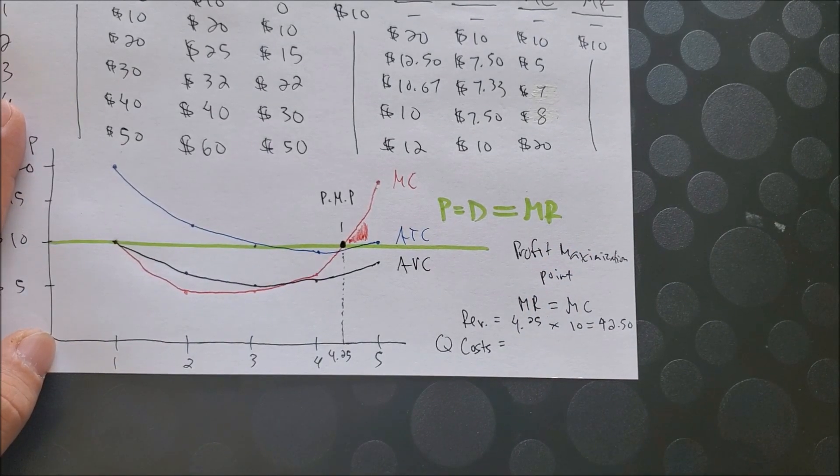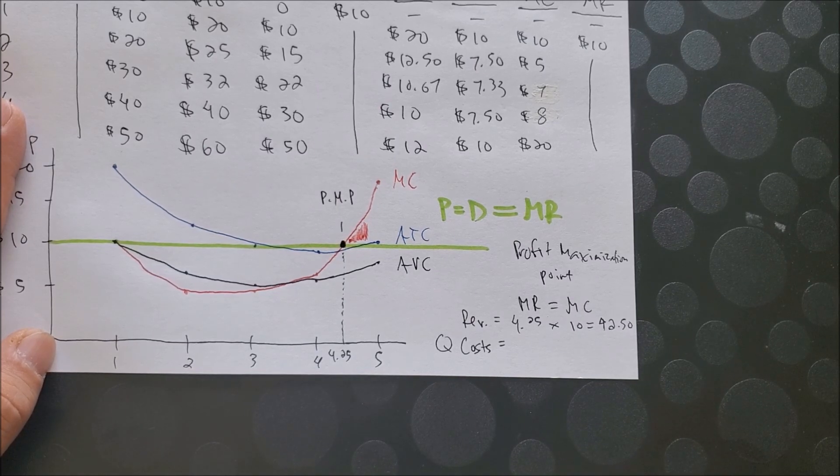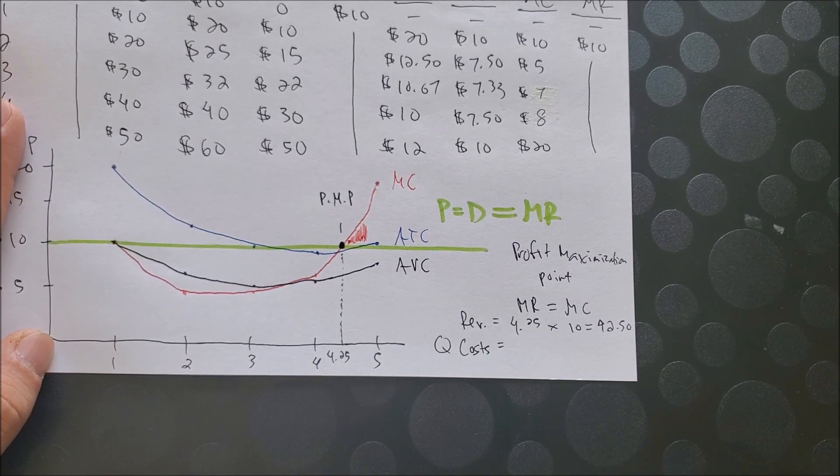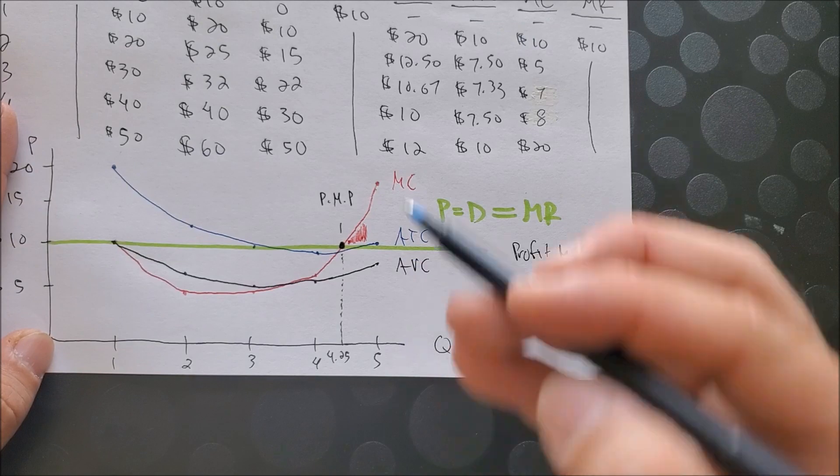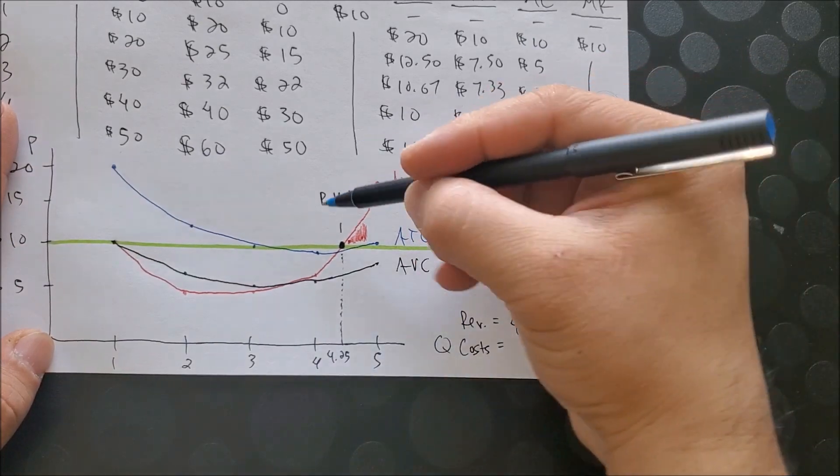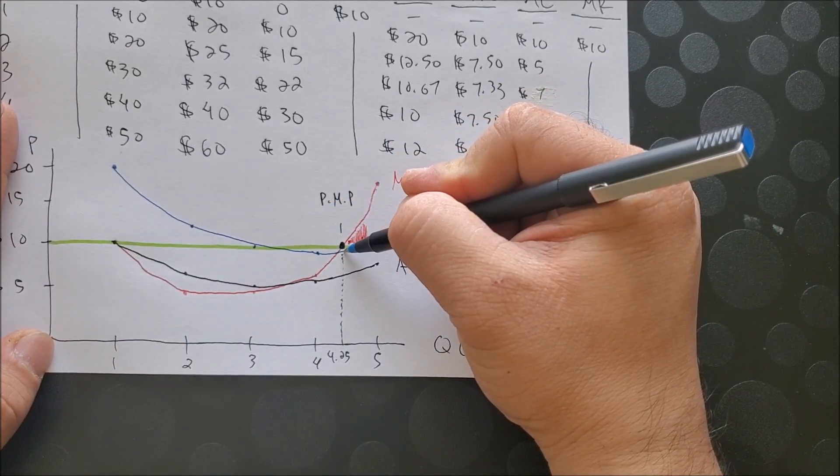Notice how we have ATC right below the profit maximization point. Again, ATC is blue. And we have ATC right about here.